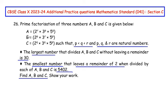Let us understand the question. They have given us three numbers a, b and c which have been prime factorized already. We can see a, b and c all have 2, 3 and 5 as their prime factors, and each one is raised to a power of p, q and r. We do not know the values of p, q and r, but p is less than q is less than r, and all three are natural numbers — numbers which start from 1 and extend to positive infinity.